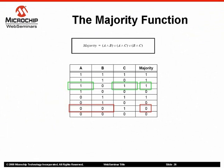In this case, two equal values represent 66% of the numbers. The majority function always returns the value of the majority of the numbers.